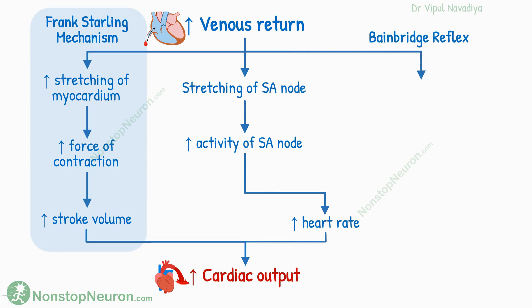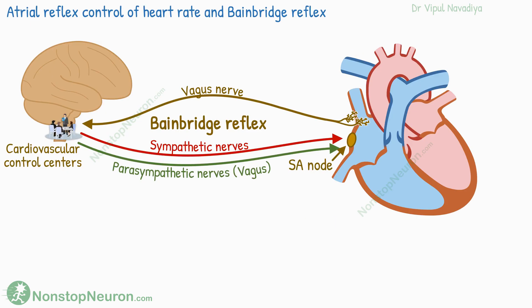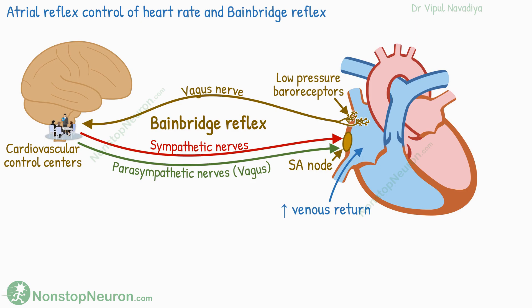And finally, we have the Bain-Bridge reflex. This is also initiated by stretching of the atrial wall. The atrial wall has low-pressure baroreceptors. An increase in venous return or blood volume increases the stretching of the atrial wall, which activates these receptors. Through the vagus nerve, these signals go to the cardiovascular control centers in the medulla. They, in turn, increase the sympathetic stimulation of the SA node, and there is also a decrease in parasympathetic activity. This causes an increase in heart rate, which in turn contributes to an increase in cardiac output.